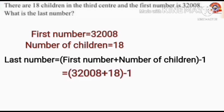That is 32,008 plus 18 minus 1. First, 32,008 plus 18: 8 plus 8 equals 16, write 6 here, 1 carry over. 1 plus 0 equals 1 plus 1 equals 2. Write 0 here, write 2 here, write 2 here, and write 3 here. 32,026.